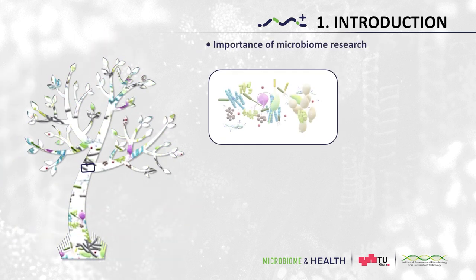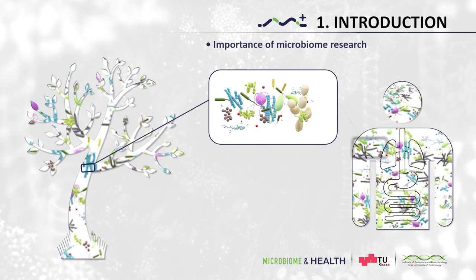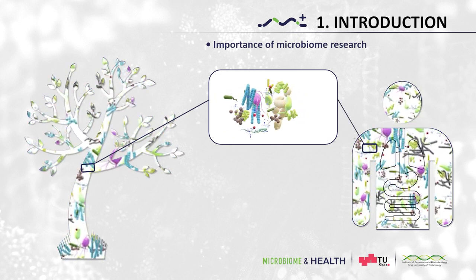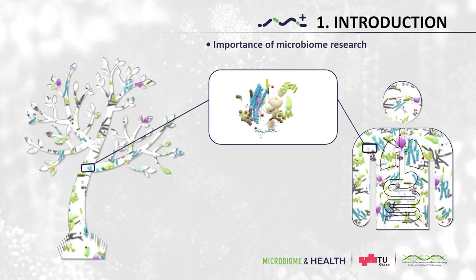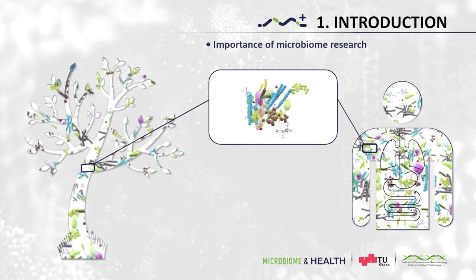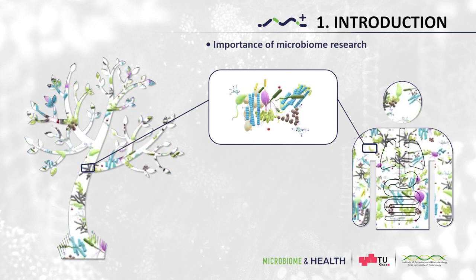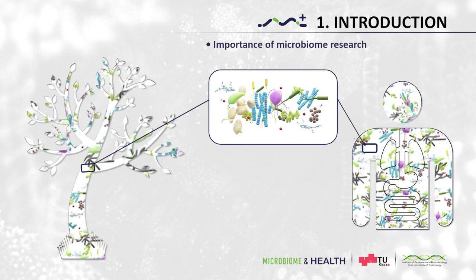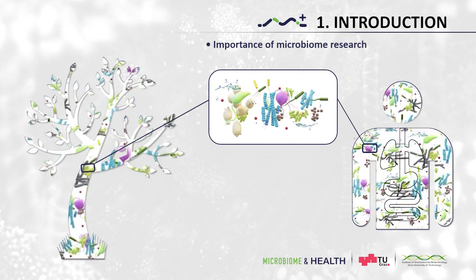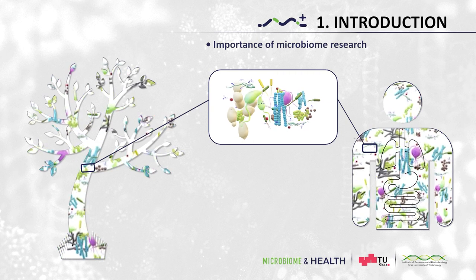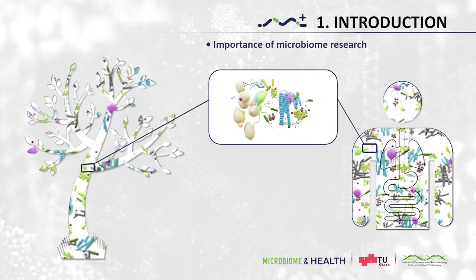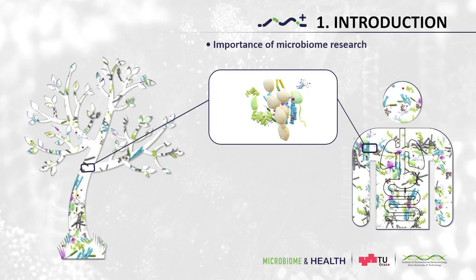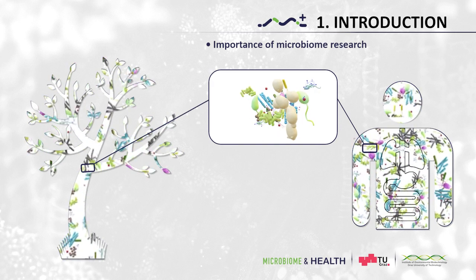Evidence is accumulating that we and all other eukaryotes co-evolved with our microbiomes. Co-evolution is defined as the reciprocal adaptation of lineages in response to one another. One example is the establishment of early land plants that was facilitated by symbiotic fungal associations, suggesting that plants have co-evolved with microbes since their first appearance on land.